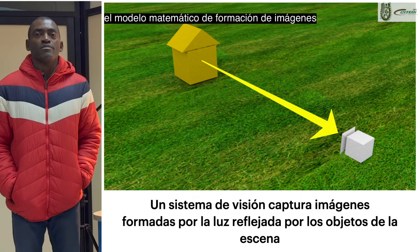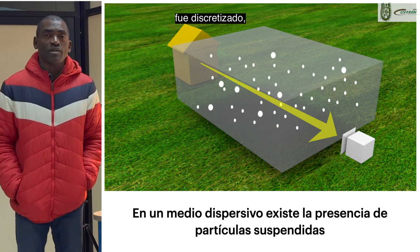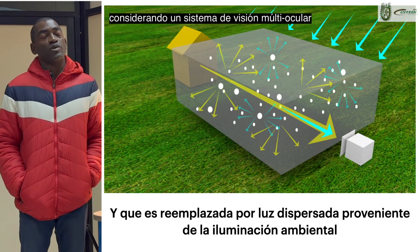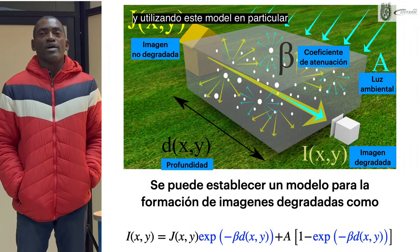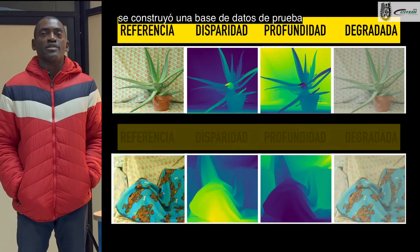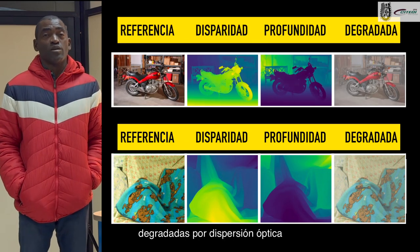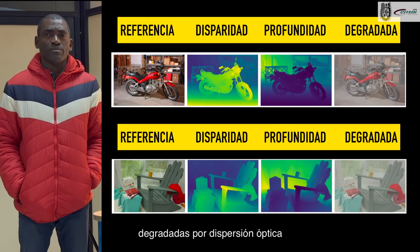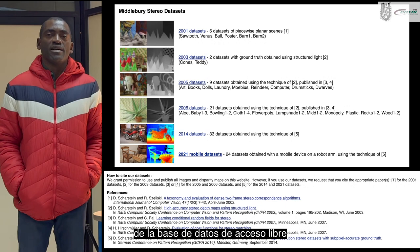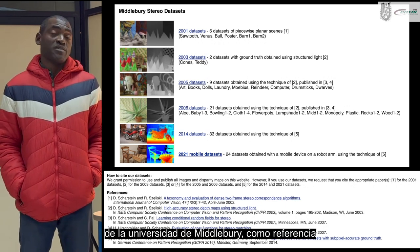The mathematical image formation model was discretized and computationally implemented considering a multi-ocular vision system. Using this model, a test database was generated with multi-ocular images degraded by optical dispersion, using stereo images from the freely accessible Middlebury database as a reference.